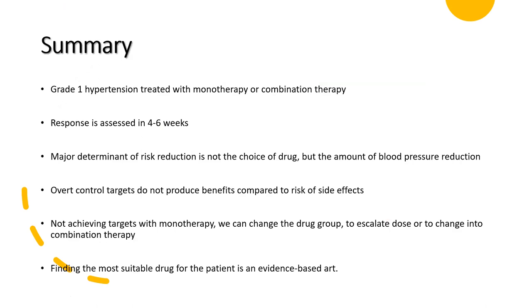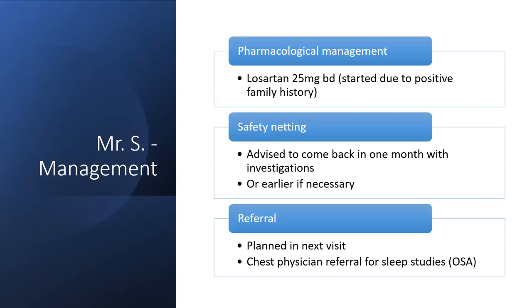In summary for pharmacological management: Grade 1 hypertension is treated with monotherapy or combination therapy; response assessed at four to six weeks. The major determinant of risk reduction is the amount of blood pressure reduction, not the drug choice. Overt control below targets does not produce benefits compared to the risk of side effects. Finding the most suitable drug for the patient is an evidence-based process.